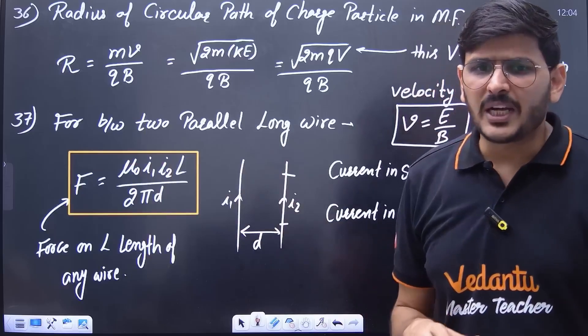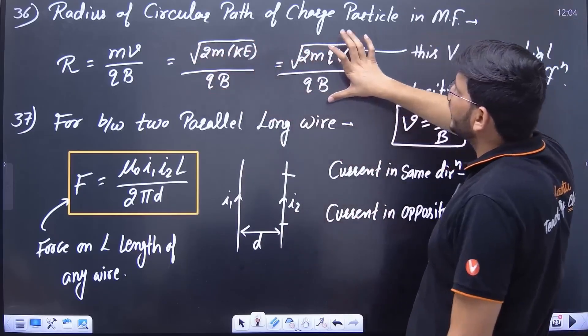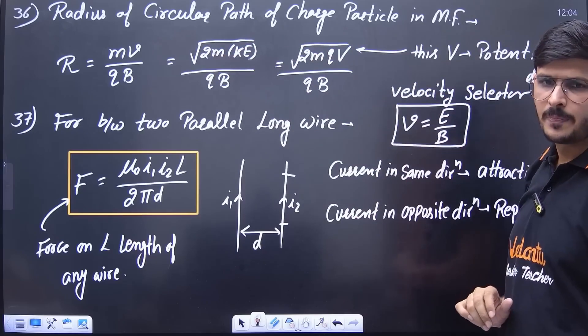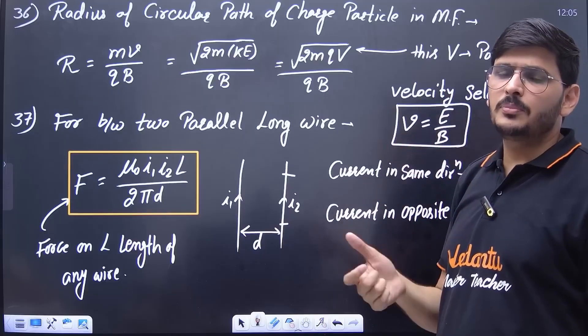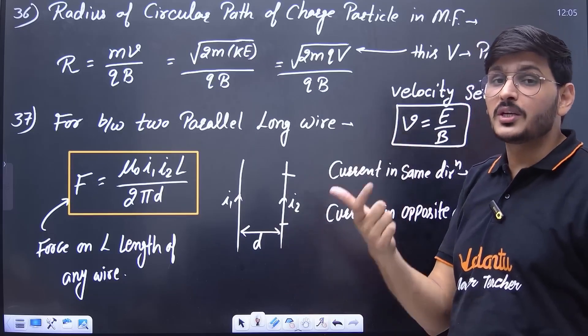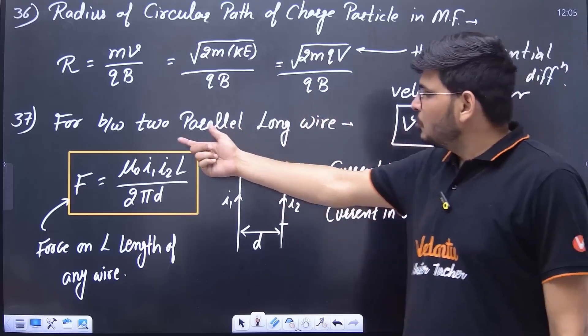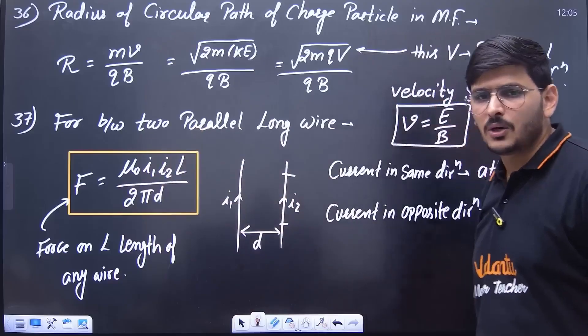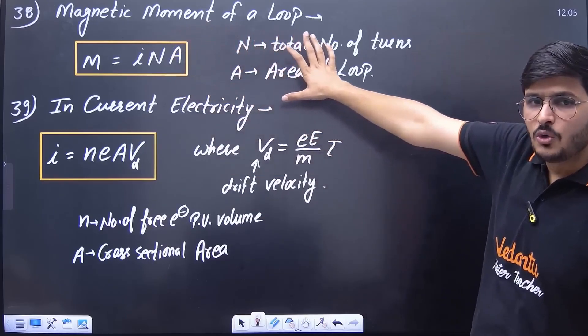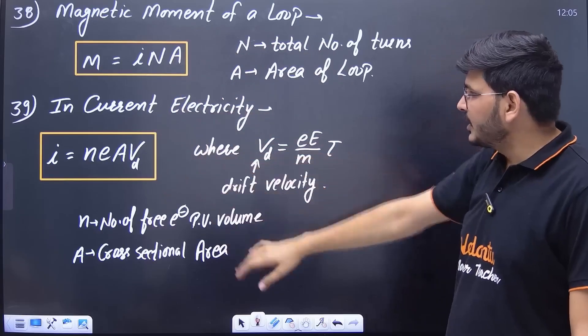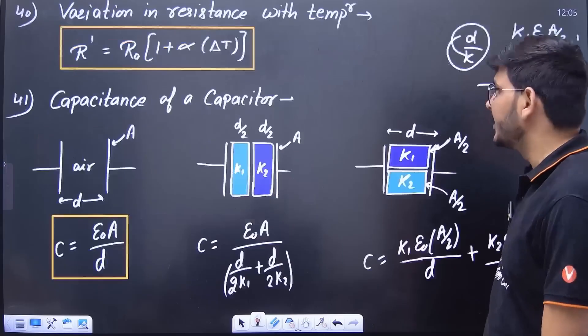After this, when the particle moves on a circular path, then the formula of its radius. All these are the same formulas. They are just written in different ways. Case of velocity selector. This should also be remembered directly. In this velocity selector, when E, V and B are mutually perpendicular, in that case the particle passes straight at this velocity without getting deflected. Similarly, there is a formula for force between two parallel wires. This is also very important. How to find the magnetic moment of a loop. This is the method. The formula for current in terms of drift velocity is also very important.